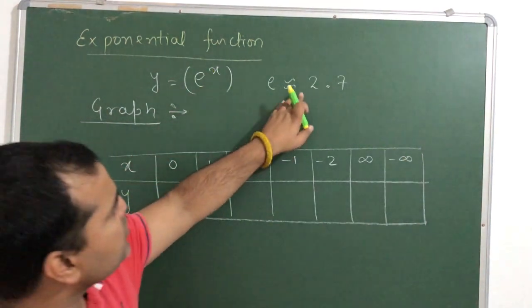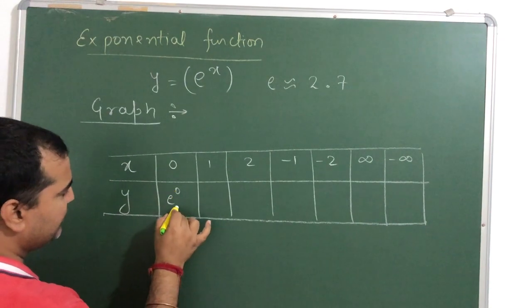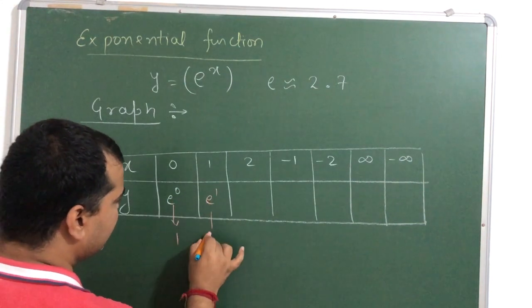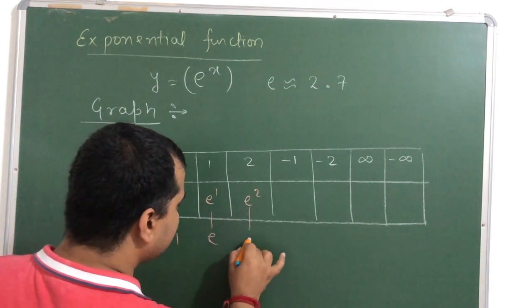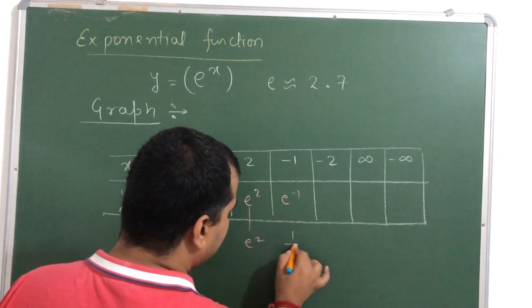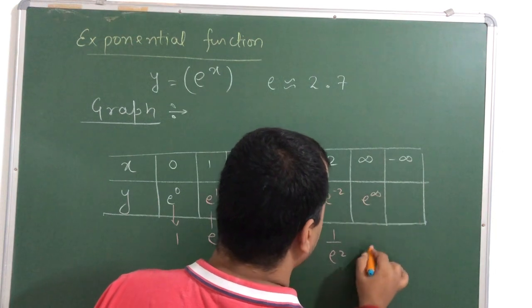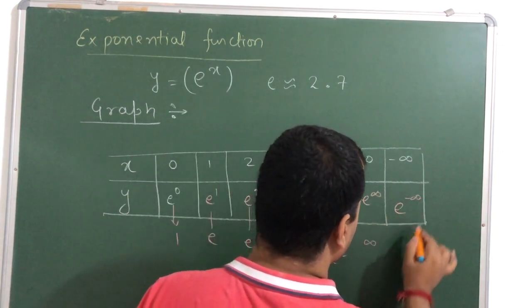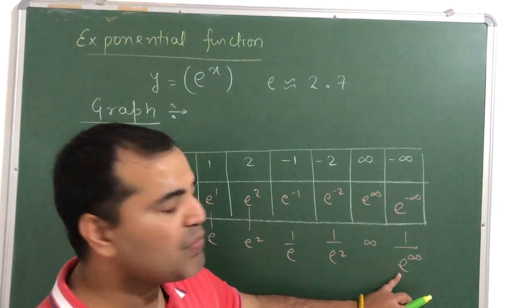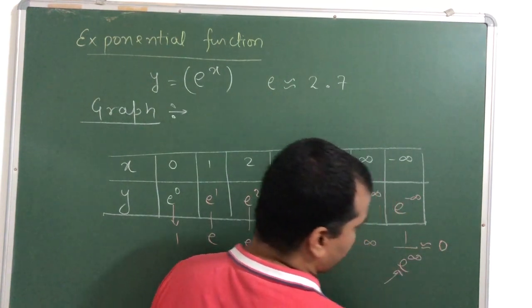e raised to 0, or approximately 2.7 raised to 0, gives us 1. e raised to 1 gives us e; e raised to 2 gives us e squared, which equals 2.7 squared. e raised to minus 1 is 1 by e; e raised to minus 2 is 1 by e squared. e raised to infinity goes to infinity. And e raised to minus infinity means we have a very huge value in the denominator, so this value will go near to 0.